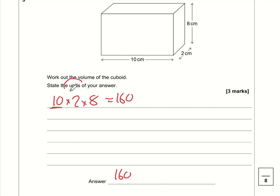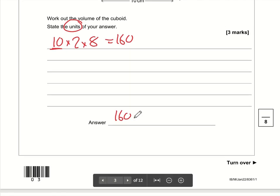What it does say is state the units. Centimeters times centimeters times centimeters is centimeters cubed. So remember, for a length it's centimeters, for an area centimeters squared, but for a volume it's centimeters cubed.